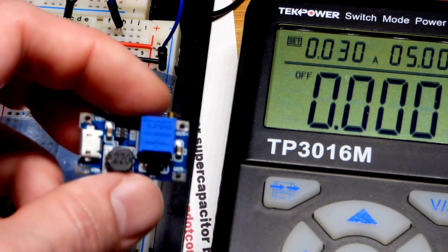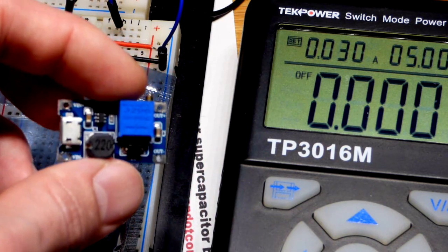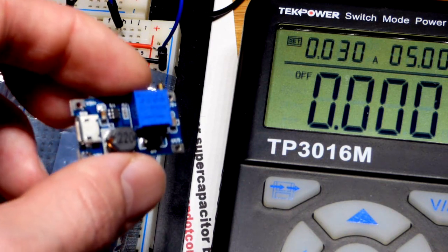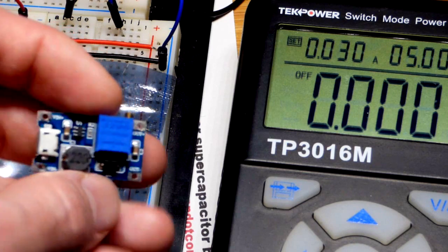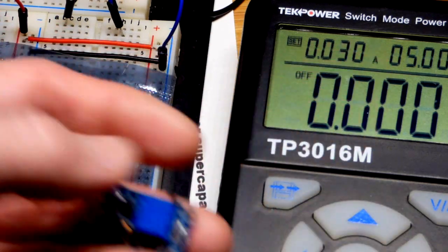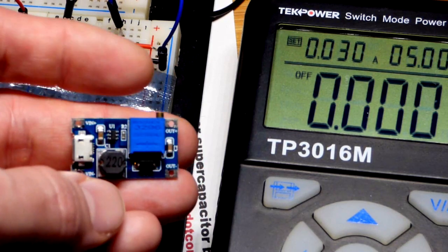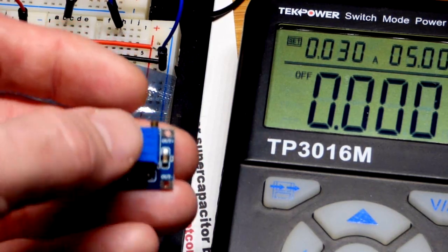You see a lot of converters that look like this. Most of them that I've seen are buck converters, so buck means it takes a higher voltage and outputs a lower voltage that you can set. There's also buck-boost that does both.